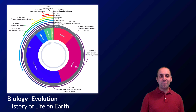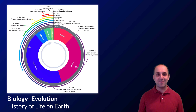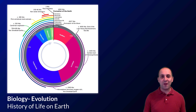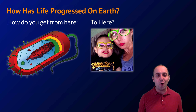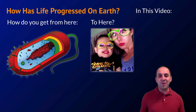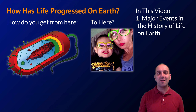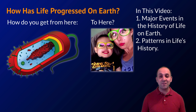Hi, and welcome to our last video in our evolution unit of biology. Here we're going to talk about the history of life on Earth. Using a diagram of the deep history of Earth, the question we're trying to answer is: how has life progressed on Earth? How have we gotten from something that looks like modern-day bacteria to the modern era of snapchatting humans? We're going to spotlight a couple of examples and some of the patterns we see in life's history.